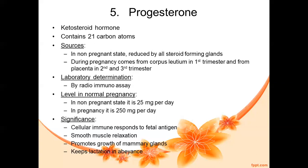Progesterone can be determined by radioimmunoassay. In a non-pregnant state, the level of progesterone in a female is about 25 milligrams per day, and in pregnancy the level is also about 25 milligrams per day. The significance of progesterone: it is mainly required to maintain and support the pregnancy, for cellular immune response to fetal antigen, for smooth muscle relaxation, for growth of mammary glands, and to keep lactation in abeyance.